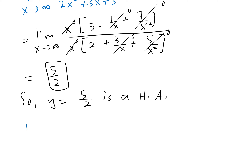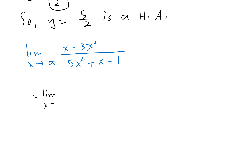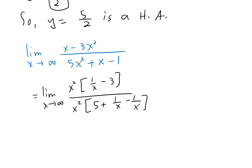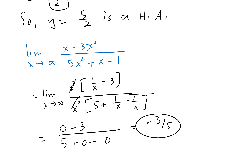It's important to show the steps and not just the answer — we need to show the full work. Try this next one: factor x squared on the top, leaving (1/x minus 3) over x squared, and on the bottom (5 plus 1/x minus 1/x squared). The x squareds cancel. Passing the limit gives (0 minus 3) over (5 plus 0 minus 0), which equals negative 3 fifths.